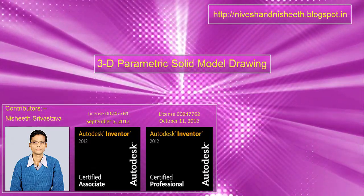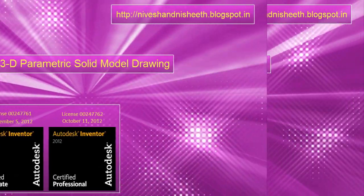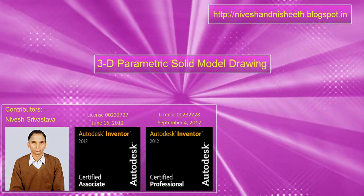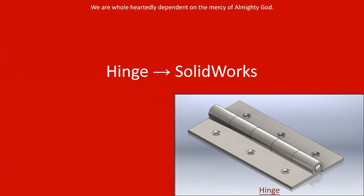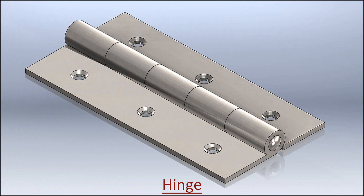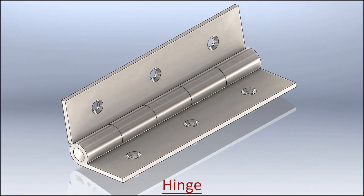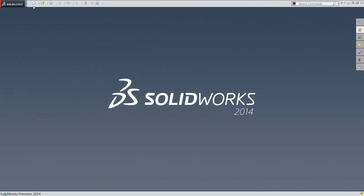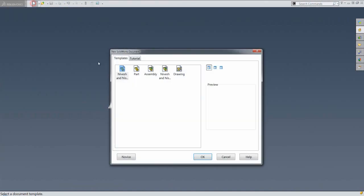Hello viewers, welcome back to our YouTube channel 3D Parametric Solid Model Ranks. Today we will create an assembly of a hinge in SolidWorks. We are showing two pictures of this model so that you can understand what this part will look like at the end. If you want to get the file of this model, the link address is given in the description. Let us start the tutorial.